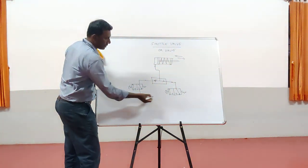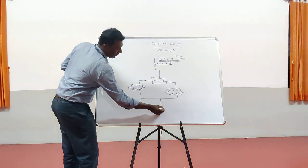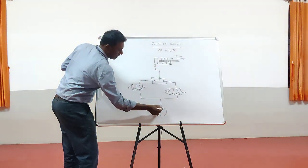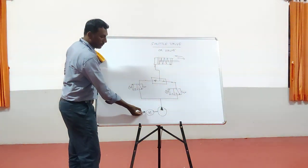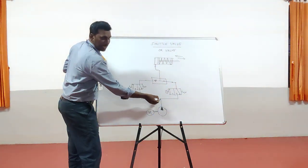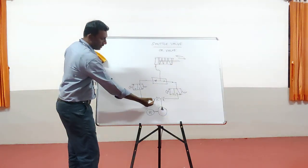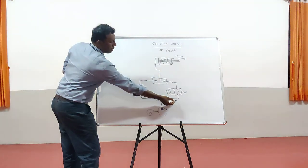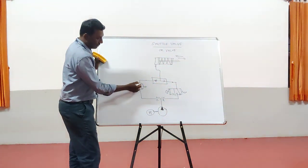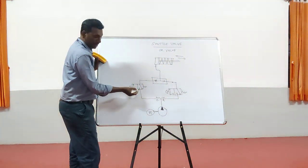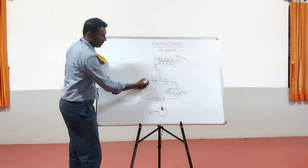To supply fluid to the system, both 3x2 DCVs are supplied by the hydraulic fluid system, which is connected to a motor. Whenever we turn on the motor, the hydraulic pump pumps the fluid with equal pressure P1 towards both valves. Whenever the fluid enters these valves, the ports are initially closed. When we press the push button on the first DCV with the spring-return motion, the first position disengages and the second position engages, connecting the ports so that fluid flows through that line and onward.